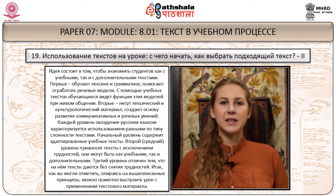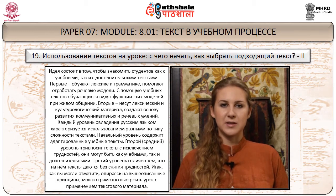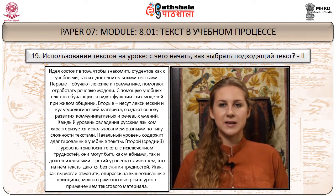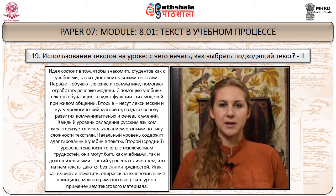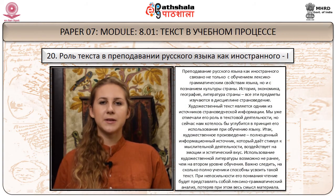Каждый уровень овладения русским языком характеризуется использованием текстов разного типа сложности. Начальный уровень содержит адаптированные учебные тексты. Второй — средний уровень — привносит тексты с исключением трудностей; они могут быть как учебными, так и дополнительными. Третий уровень отличается тем, что на нём тексты даются без снятия трудностей. Опираясь на эти принципы, можно грамотно выстроить урок с применением текстового материала.